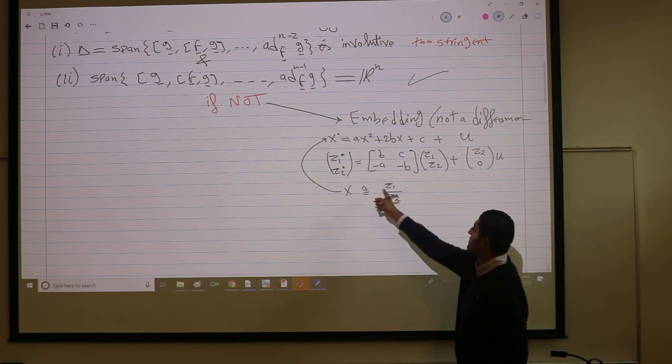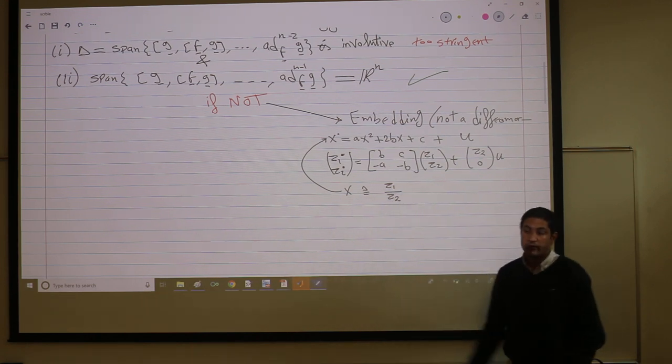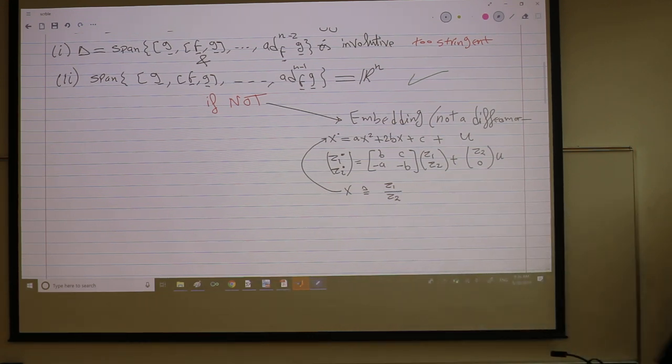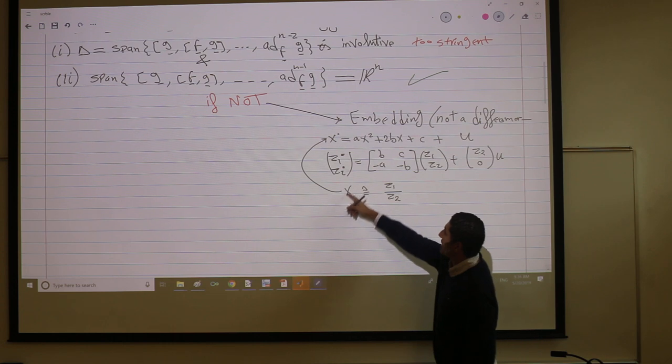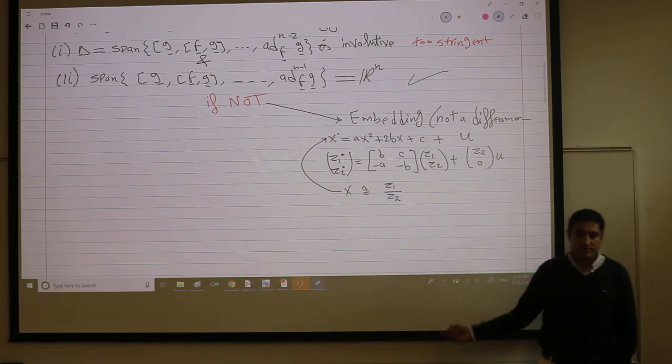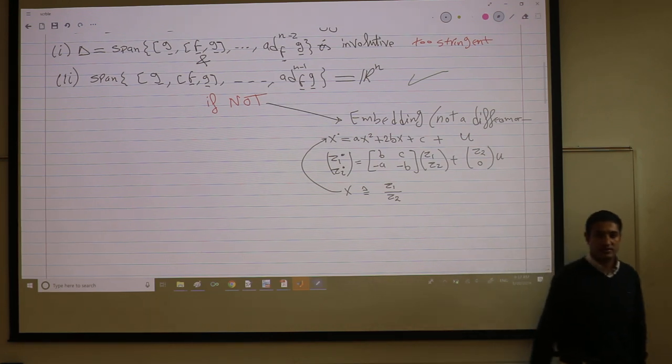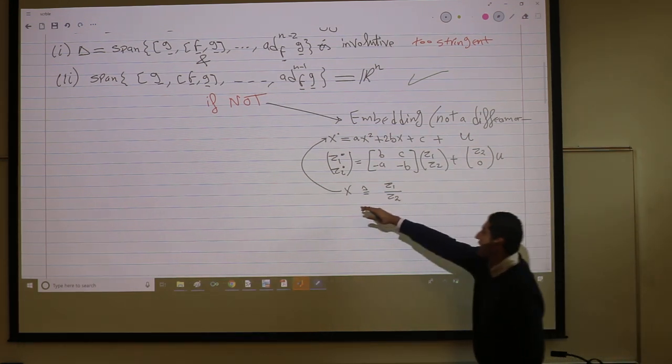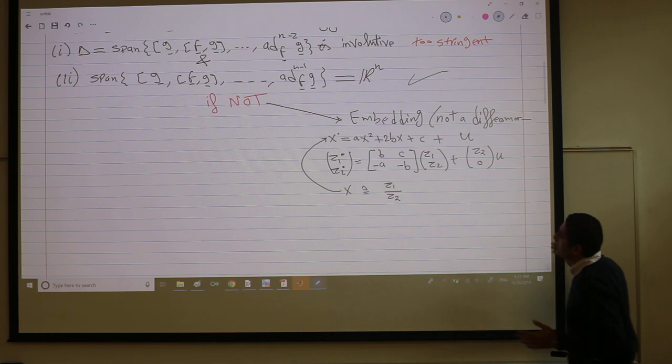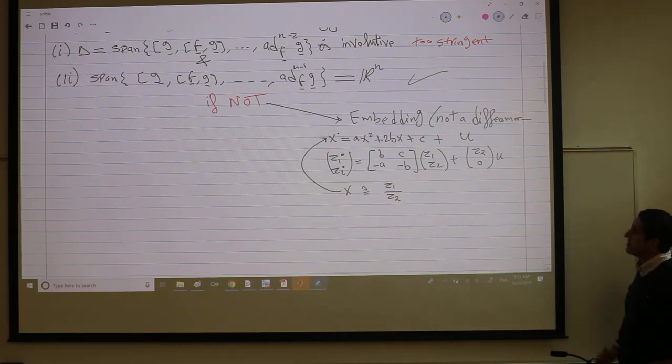So x dot is z2, z1 dot minus dot dot. But there is no way to get the z's out of the x's, right? Because we have x, we have infinitely many things to get z1 and z2. If you have the z1 and z2, you can get x.